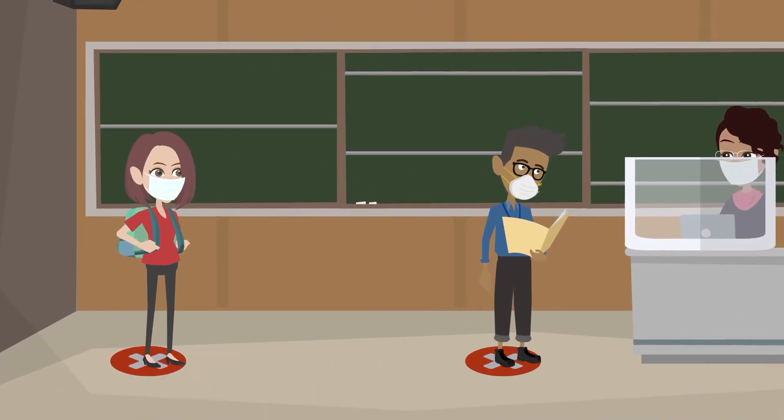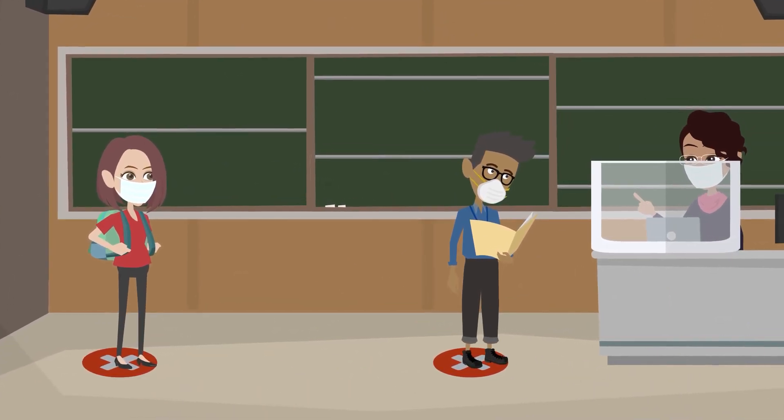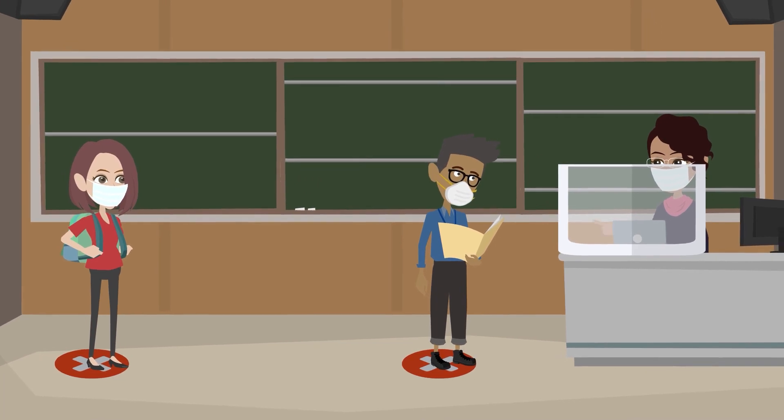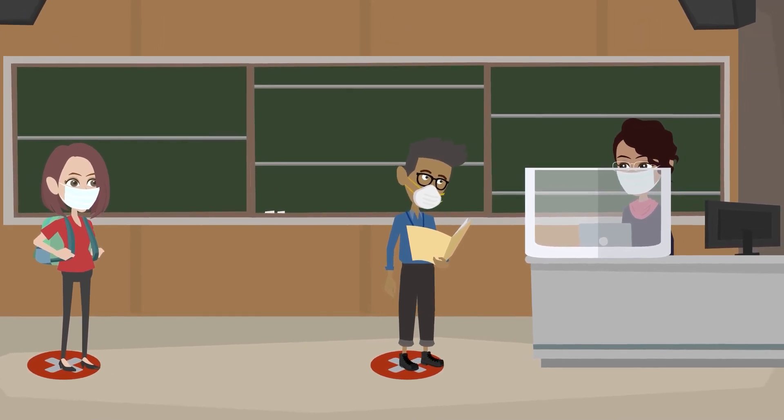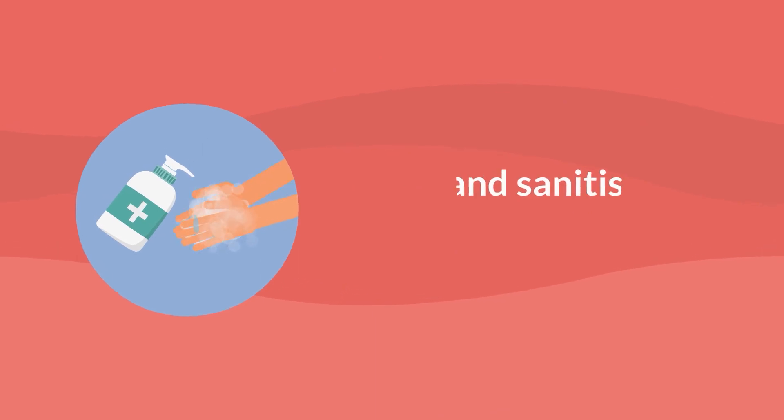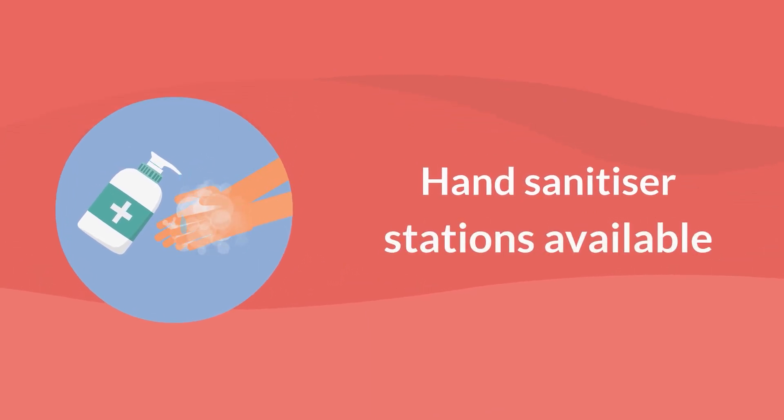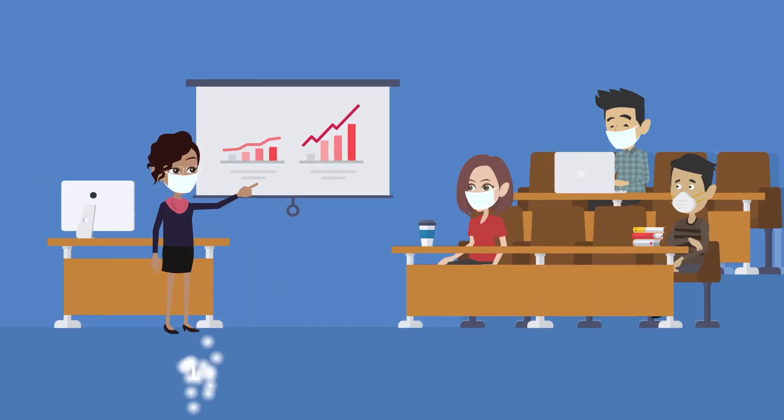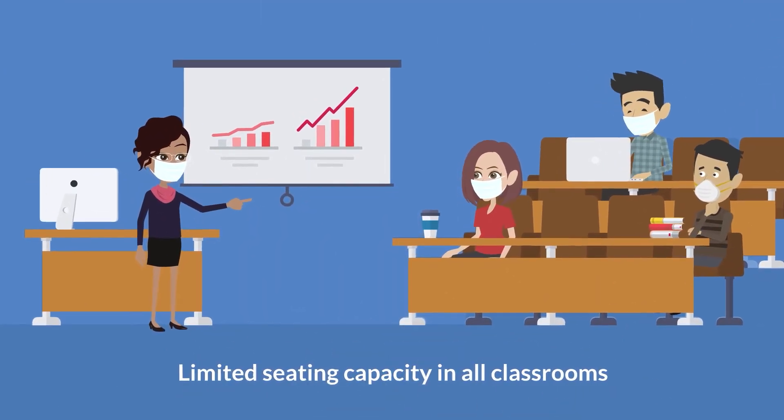Directional signs on the floor will allow you to maintain physical distancing. There will be protective barriers to minimise mixing between students and staff. Hand sanitiser stations available at all entrances and classrooms and in common areas. Limited seating capacity in all classrooms to accommodate physical distancing.